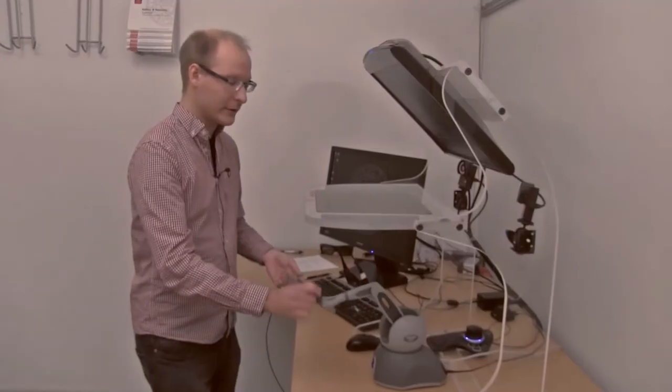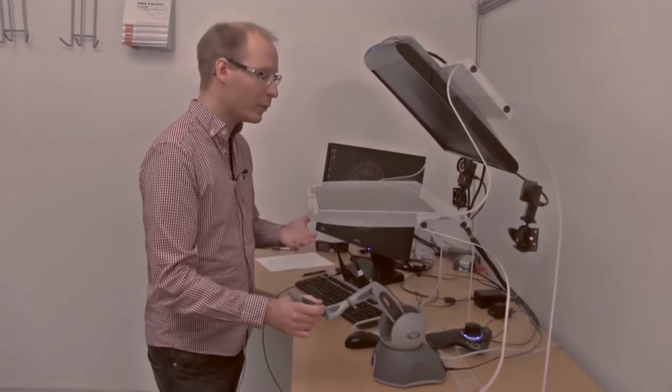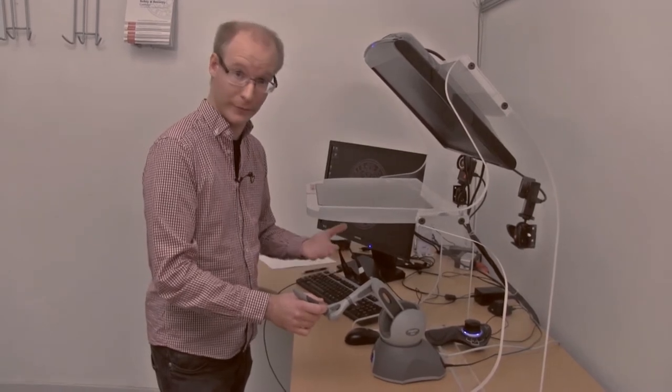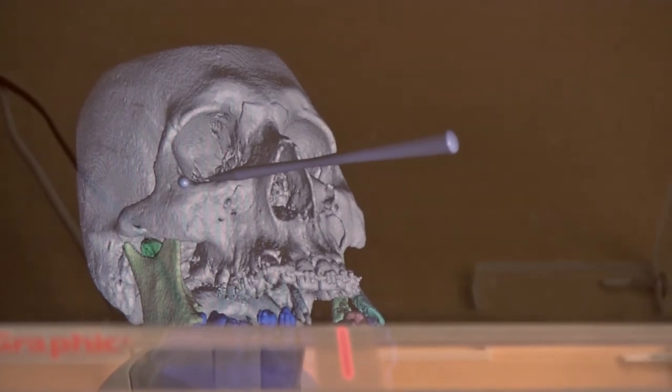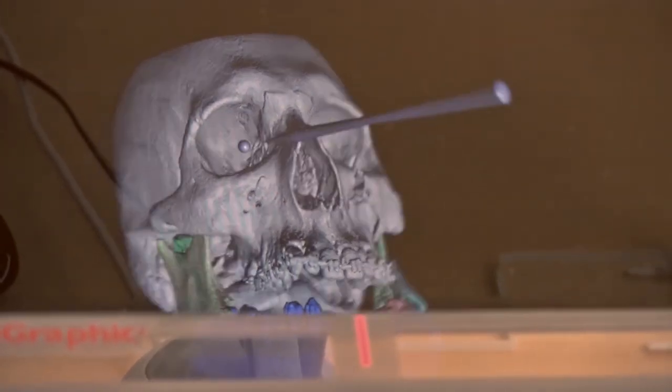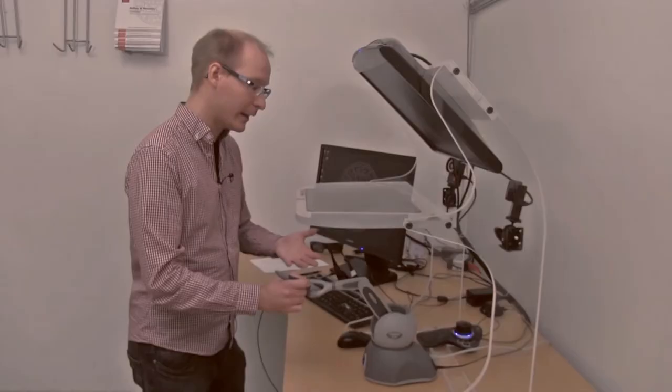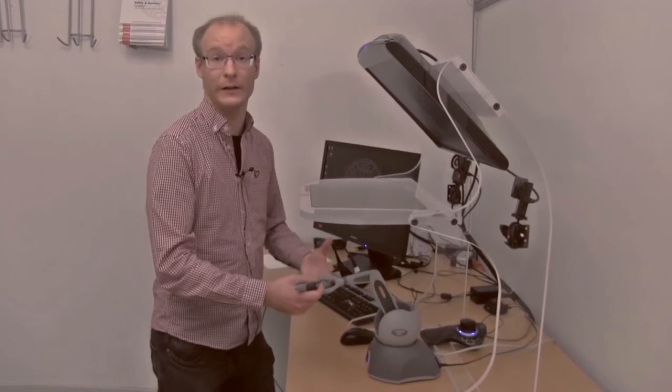So basically the pen controls a three dimensional cursor in the program. And whenever that cursor is in contact with the three dimensional model of the patient's skeleton, I can feel that contact as a very hard and stiff contact. And I can also use it to pick up pieces of bone, for example, and put those together. And when they are in contact, I can feel the contact forces.